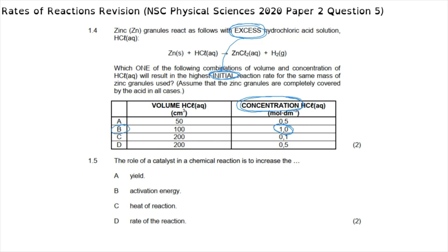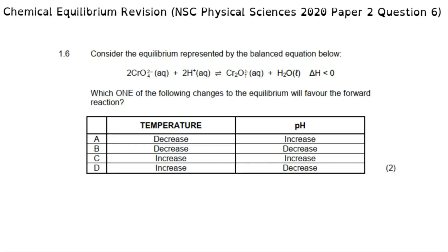Question 1.5 asks about the role of a catalyst in a chemical reaction. A catalyst does not increase the rate of the forward reaction more than the reverse. It does not change the heat of the reaction, and while it does affect activation energy, it decreases it. The only thing a catalyst increases is the overall rate of reaction. The correct answer to 1.5 is option D.